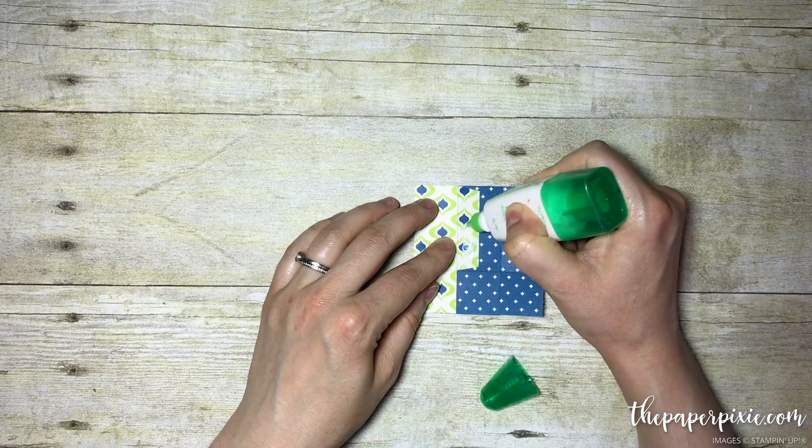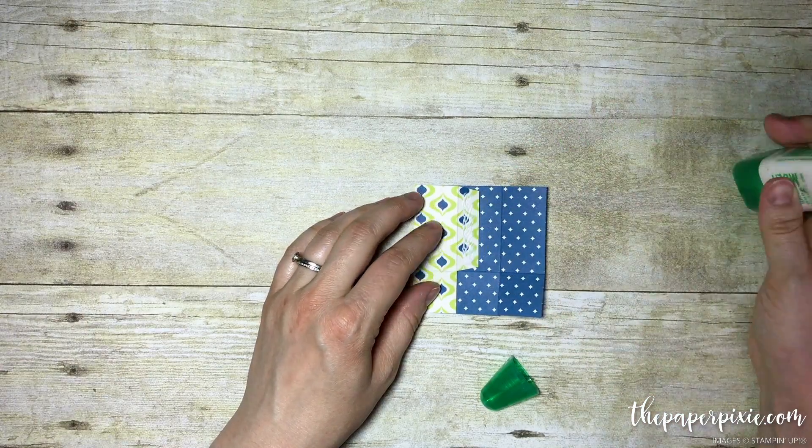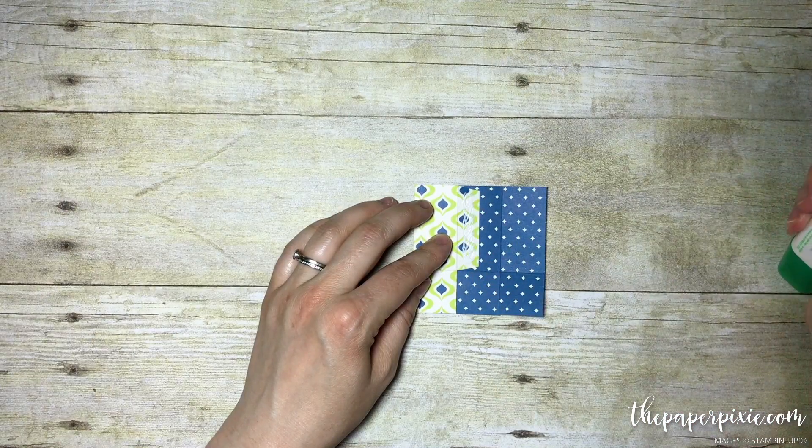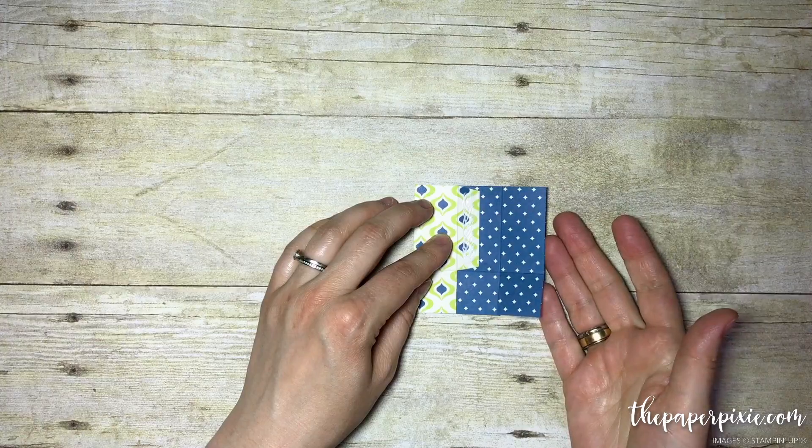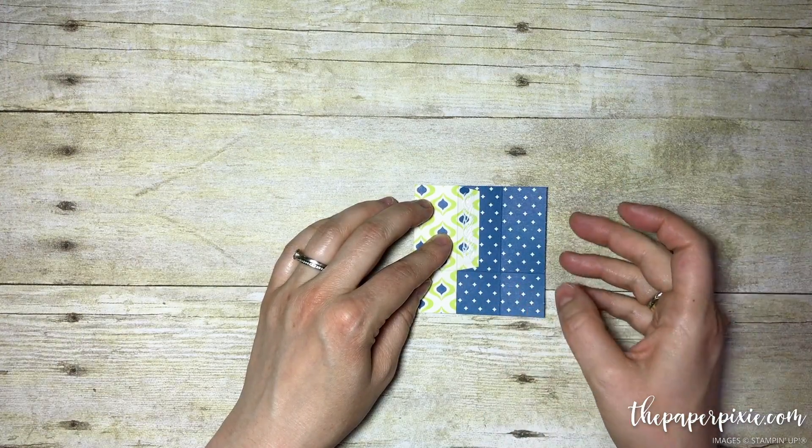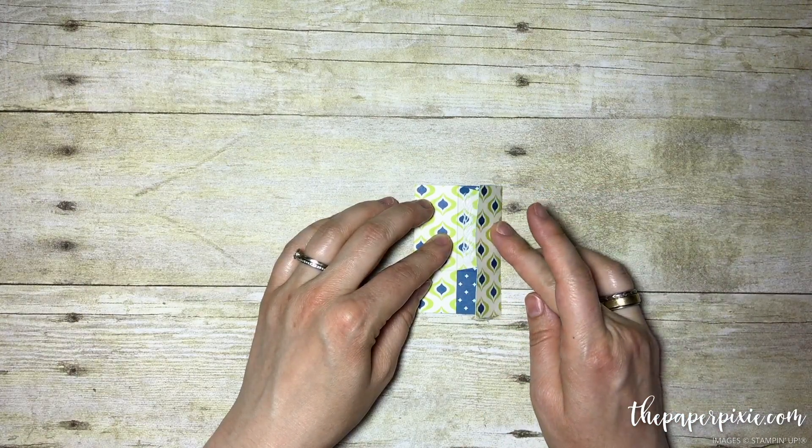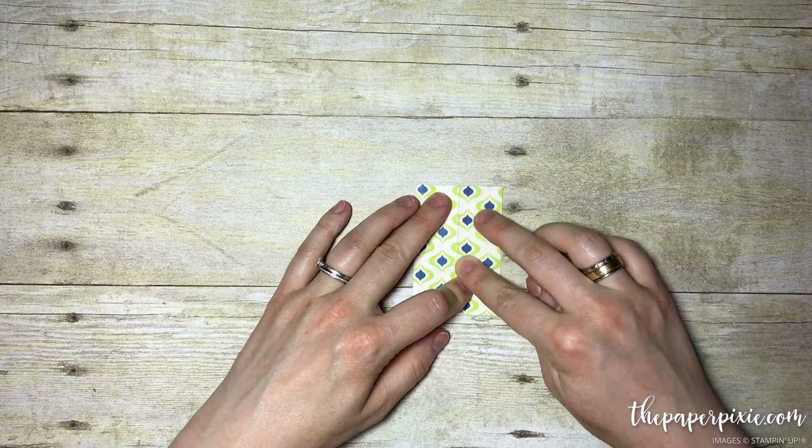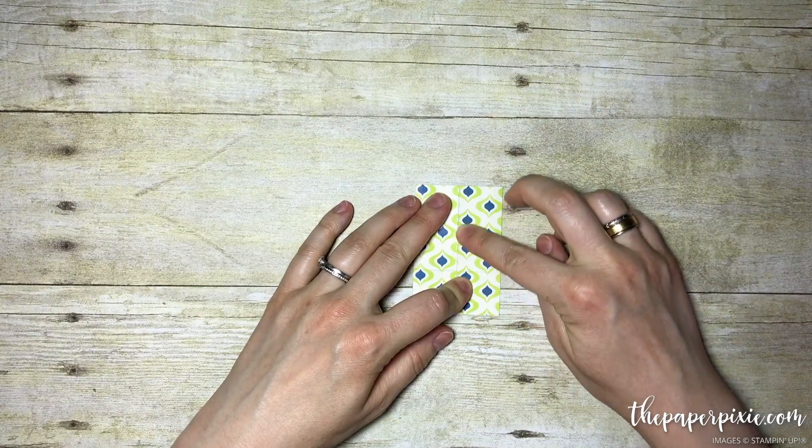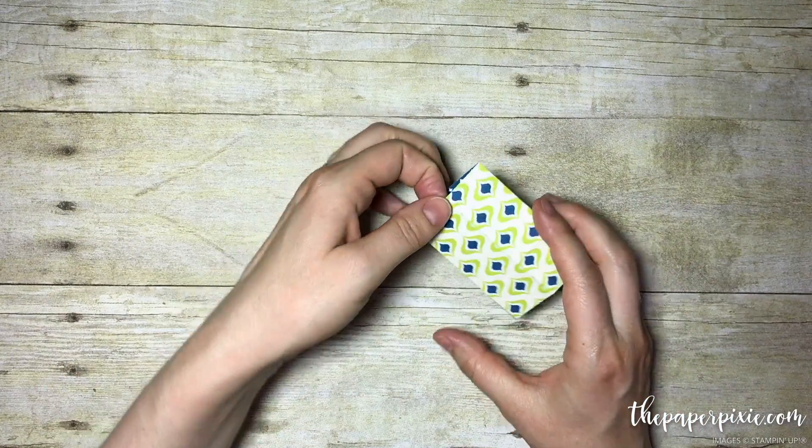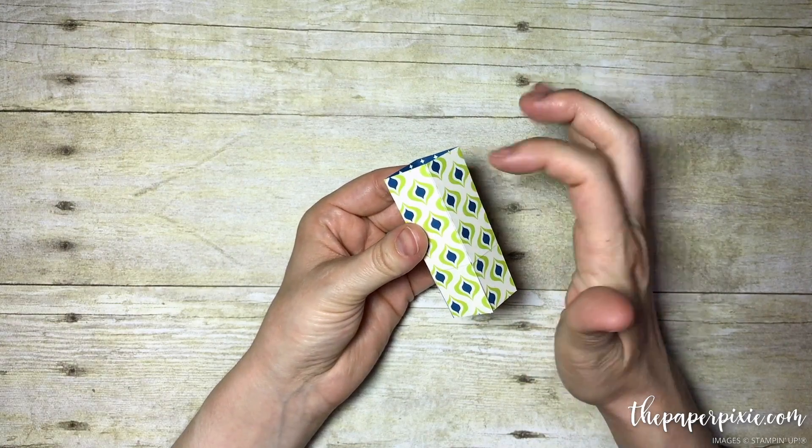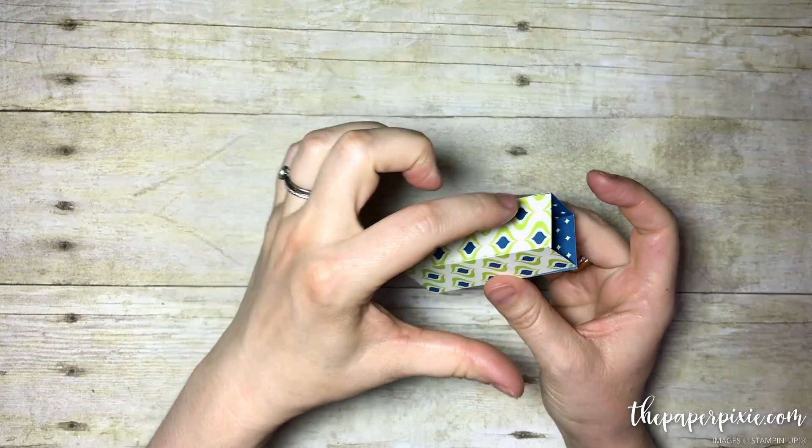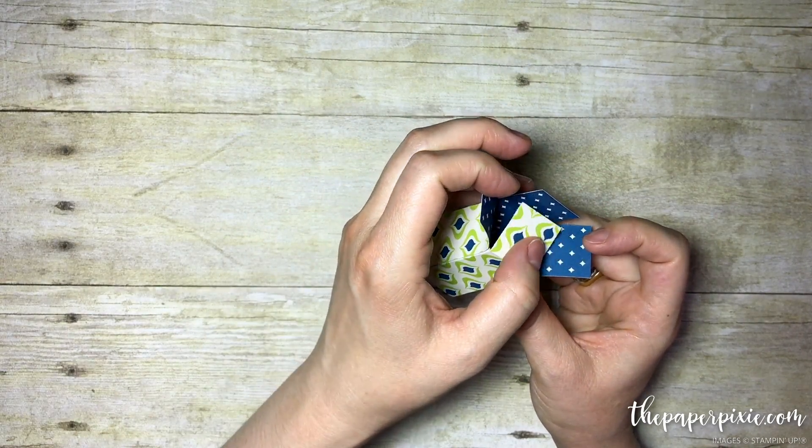I would go with either the mono multi liquid glue, the fast fuse, or tear and tape. Put glue along that tab there, and because this box is square in nature, all you need to do is fold this flap down and it will line up exactly where you want it. Because this is where we adhered the box, I'm going to consider this the back.